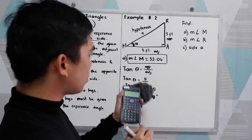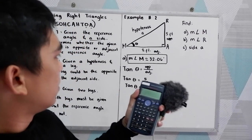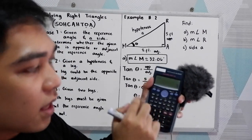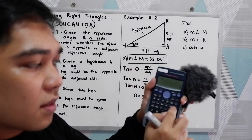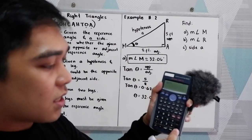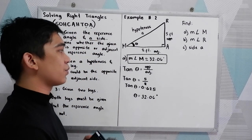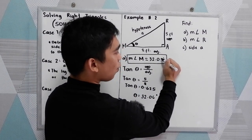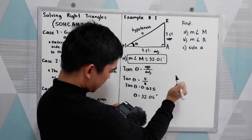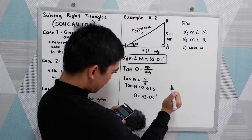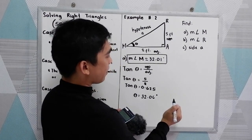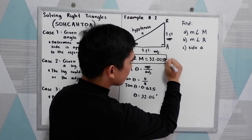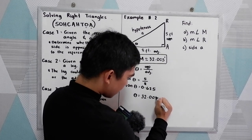Another way to solve this: just press 5 divided by 8, equal sign, then shift, then tangent — so 5 over 8, shift tangent, equal sign gives 32.005. If you want three decimal places, it can be written to three decimal places as 32.005.